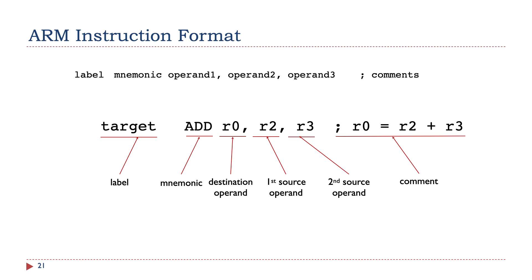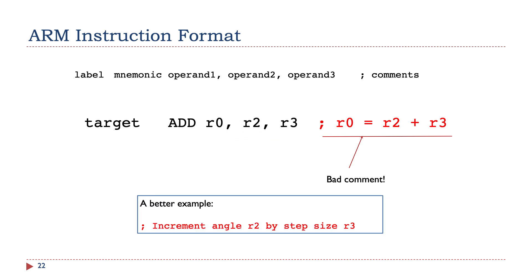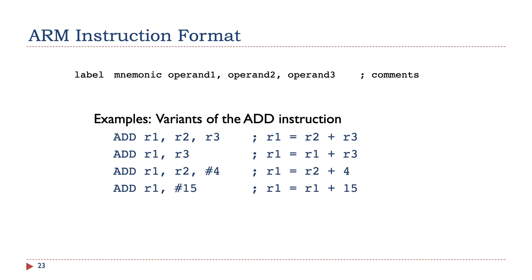Here is an example of an ARM instruction. Note that not all instructions require a label and a comment. The label 'target' marks the memory address of the add instruction beside it. Comments are only used to explain details that are not obvious. A bad comment is one that simply repeats what is already obvious. A better comment should give more detail about the instruction, like 'to increment an angle by a step size.' These are other examples of ARM instructions — notice that they are all add instructions with different operands. We'll talk more about these instructions in the next succeeding videos.